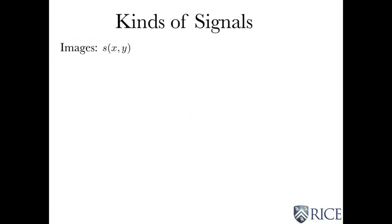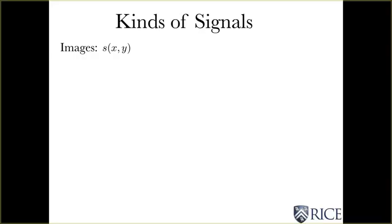So let's talk about some other kinds of signals. Another way of categorizing them. And I want to talk first about images. So the speech signal we already talked about is a function of time. Images are functions of space. So they're a function of x and y.